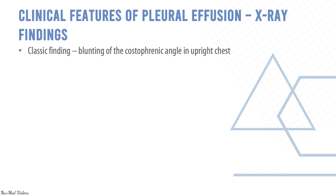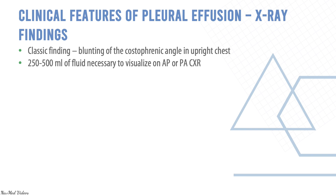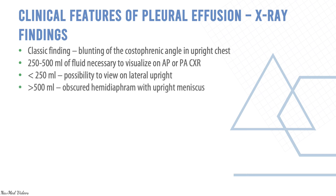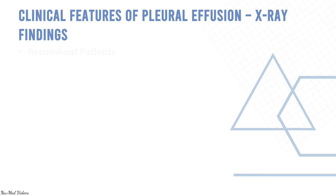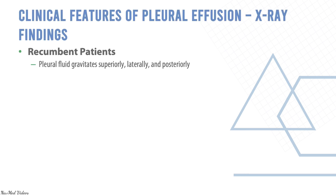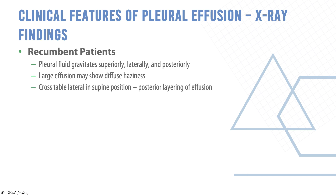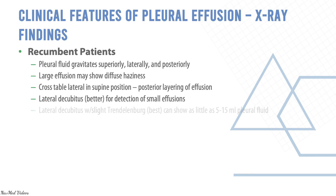On X-ray, blunting of the costophrenic angle is a classic finding. 250 mL of fluid is necessary to visualize on AP or PA X-ray; if less than 250 mL, a lateral upright X-ray can be used. More than 500 mL causes obscured hemidiaphragm; a massive effusion gives total hemithoracic opacification. In recumbent patients, pleural fluid gravitates superiorly, laterally, and posteriorly. A large effusion may show diffuse haziness. Cross-table lateral in supine position shows posterior layering of the effusion. Lateral decubitus with slight Trendelenburg can show as little as 5–15 mL of pleural fluid.